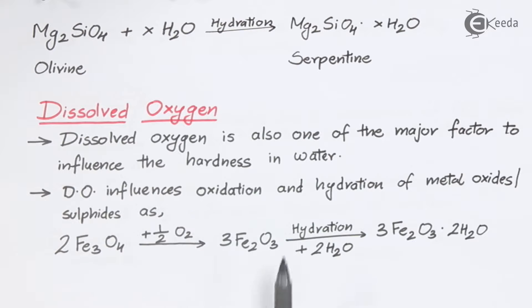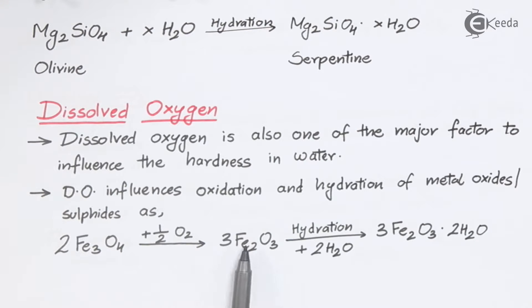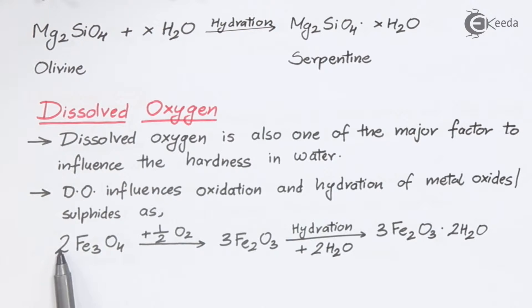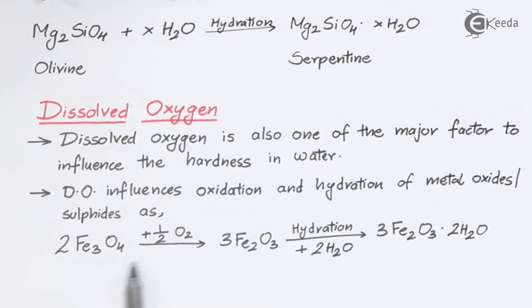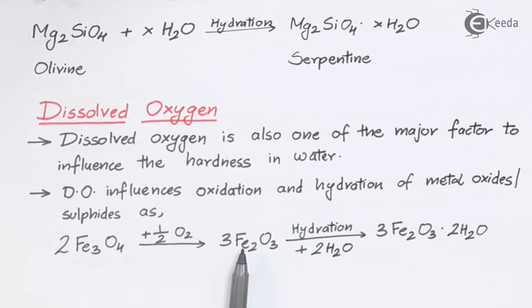Let us verify the balancing of 2Fe3O4 + ½O2 → 3Fe2O3. For iron: 3×2 = 6 Fe on the reactant side; 3×2 = 6 Fe on the product side. For oxygen: O4 × 2 = 8, plus ½O2 = 1, totaling 9 on the reactant side; O3 × 3 = 9 on the product side. The equation is balanced — this is the oxidation reaction.